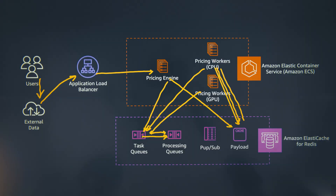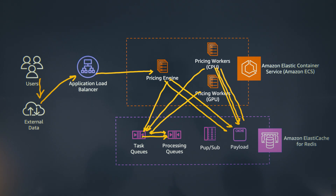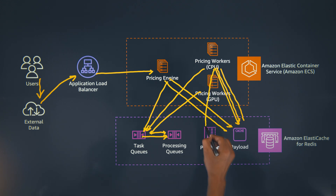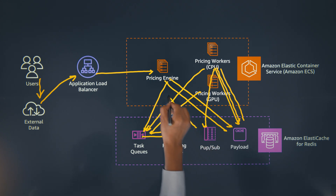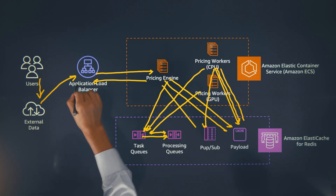After the results are stored in Redis, how does that get back to the traders? We have two mechanisms. One is the pricing engine doing priority polling from Redis to see if the result is available. The second approach is to trigger a result-available notification from the worker and publish it in the PubSub channel. The PubSub channel will then notify the pricing engine, and the pricing engine will return that result back to the traders.